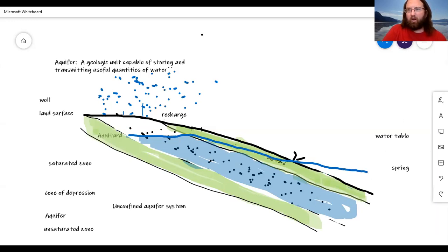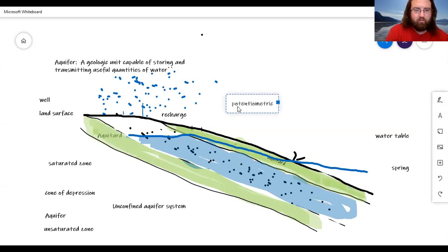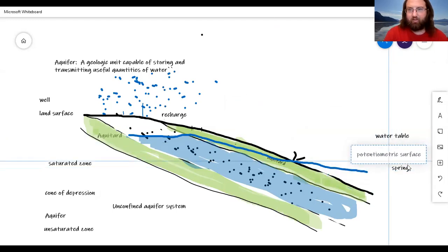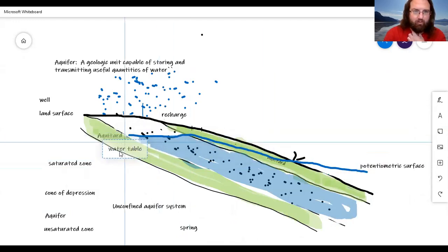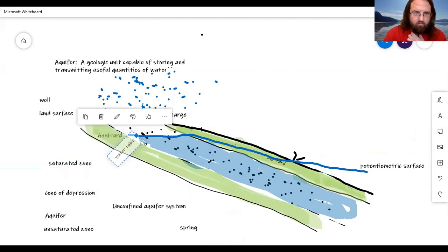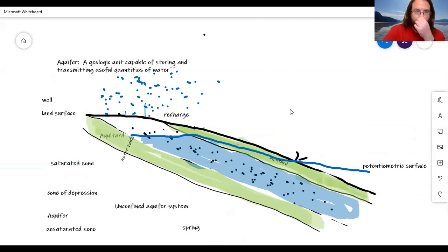So, we call this, instead of calling it a water table, because it's not the boundary between where the rocks are saturated and unsaturated, we call it a potentiometric surface. And quite simply put, this is the height to which water in a well would rise if you drilled a well there. So, this whole thing is saturated through its entire thickness.